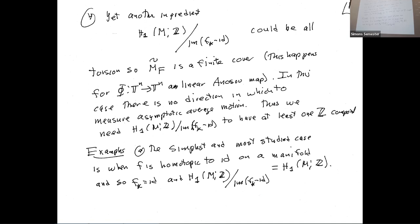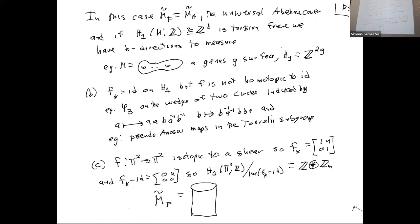If you're homotopic to the identity on a manifold, you choose the universal abelian cover — the cover built so that deck transformations are exactly Z^b where b is the rank of H_1. For a genus-g surface you have 2g directions to measure homology in. For the torus, the universal cover is the universal abelian cover, which is R^n, and you just compute displacements. The annulus is also much studied: you use the cover and measure displacement in one direction.